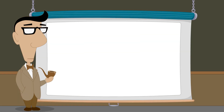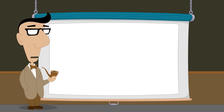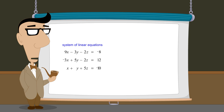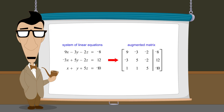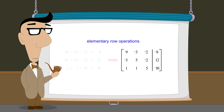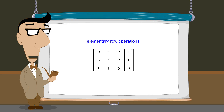So far we have seen how to represent systems of linear equations using augmented matrices. In the next lecture, we will introduce three matrix operations called elementary row operations which are used to transform an augmented matrix.